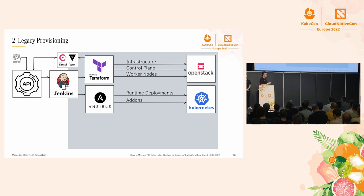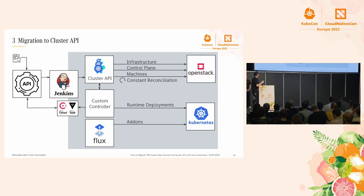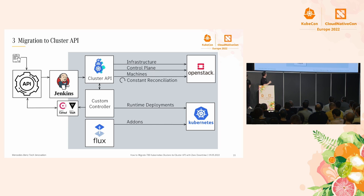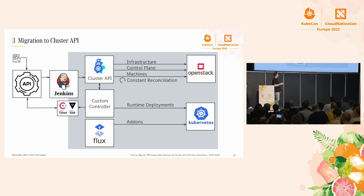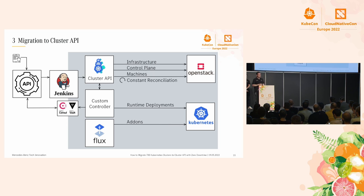Now the target picture: the user can order a cluster as before, but in the background things have changed. The main change is that Jenkins will trigger a custom binary that deploys resources into our Cluster API management server. Cluster API will reconcile the infrastructure, control planes, etc. After the cluster is provisioned, our custom controller will hook in at the right time to deploy runtime deployments, and Flux will deploy our cluster add-ons.